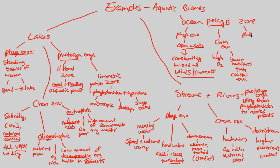In terms of photosynthetic organisms, the ocean pelagic zone is dominated by tons of phytoplankton. Phytoplankton play a critical role in all aquatic biome examples and are essentially the dominant producers in the ocean pelagic zone, playing a critical role in the ecology of all these water environments.